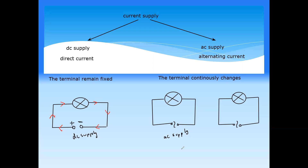In AC supply, the terminals continuously change. At one moment, the left-hand side is positive and the right-hand side is negative, so conventional current flows from positive to negative. But then the supply changes its terminals: the right-hand side becomes positive and the left-hand side becomes negative, and the direction of the current changes. So AC supply continuously changes the direction of current.